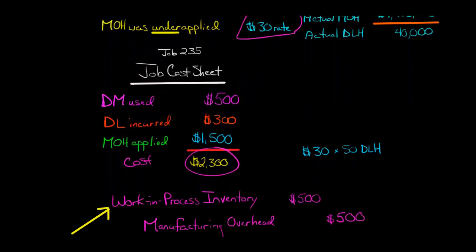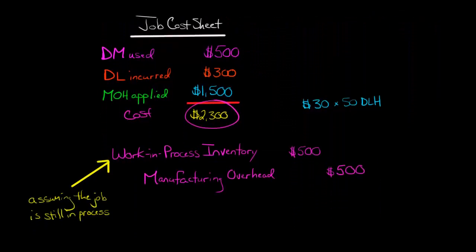How do we think about this in terms of journal entries? In this example, we're assuming that this job is still in process. So the adjusting journal entry you could make is you could credit manufacturing overhead for $500. Because normally when you apply manufacturing overhead, you credit manufacturing overhead. So you credit it for that $500 that was underapplied, and then you debit work-in-process inventory for $500. Remember, that's an asset.